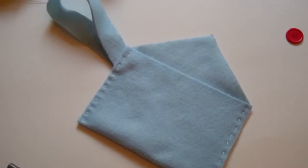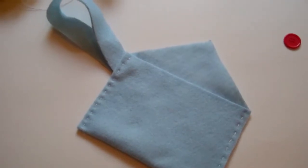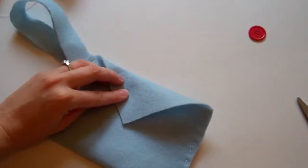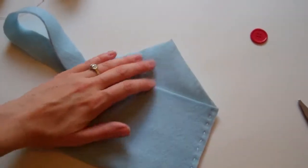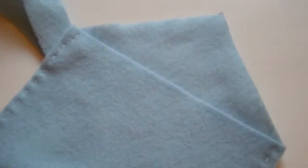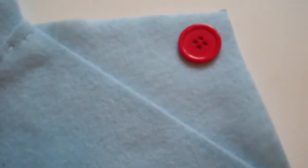We are now ready for the last step, which is to add a button to our felt envelope. I am not closing the top flap yet. I'm going to leave it open here, and I'll tell you why in just a moment. I'm at the top of the triangle, and I'm going to take my button and put it right about here.